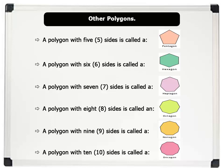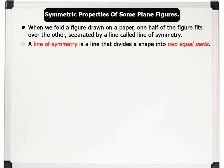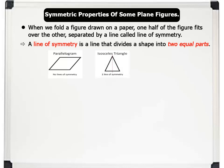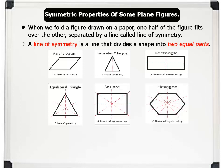Now let us look at symmetric properties of some plane polygons. When we fold a figure drawn on paper, one half of the figure fits over the other, separated by a line called the line of symmetry. Therefore, a line of symmetry is a line that divides a shape into two equal parts. Different shapes have different numbers of lines of symmetry, or none at all. For example, a parallelogram has no lines of symmetry. An isosceles triangle has a single line of symmetry. A rectangle has two lines of symmetry. An equilateral triangle has three lines of symmetry. A square has four lines of symmetry. A hexagon has six lines of symmetry. And a circle has an unending number of lines of symmetry.